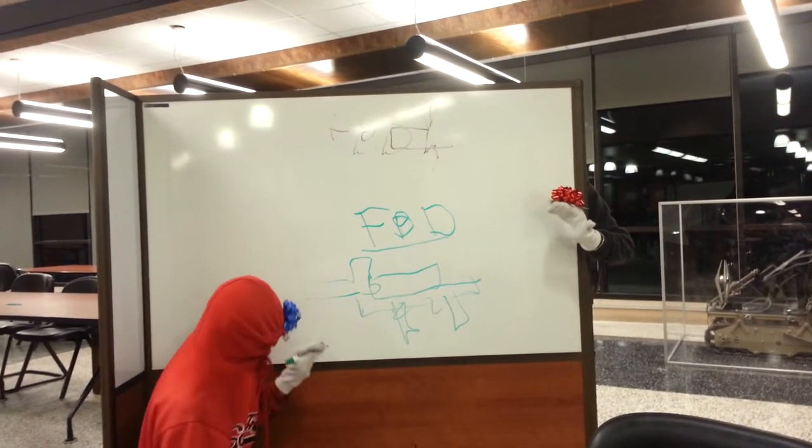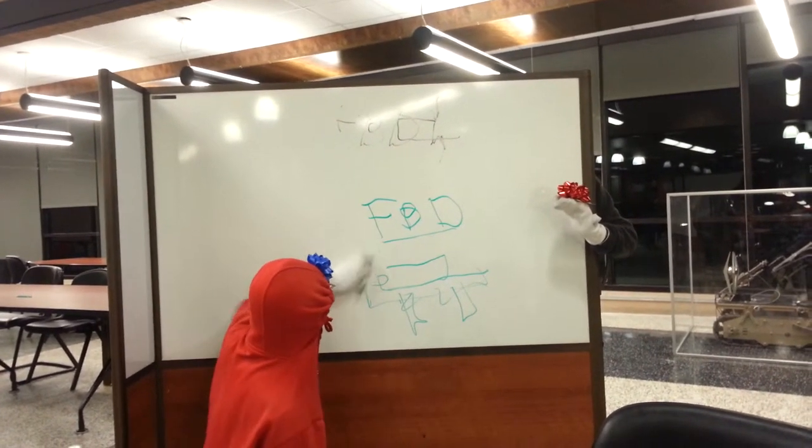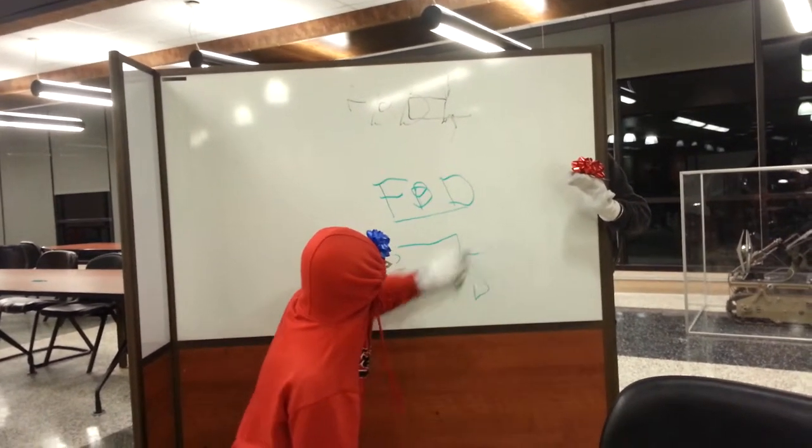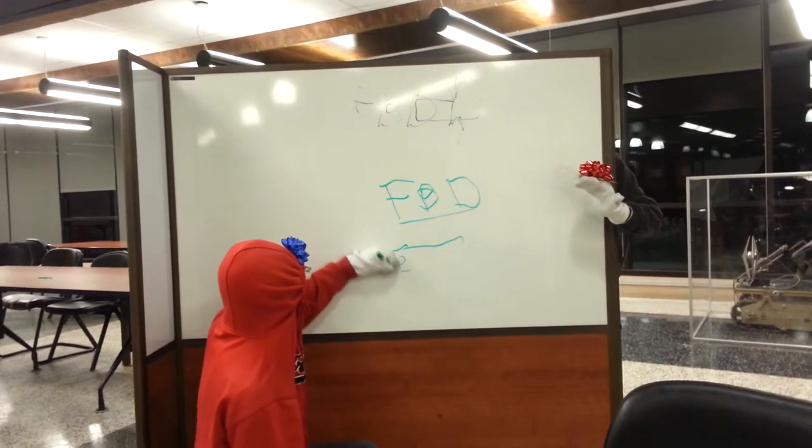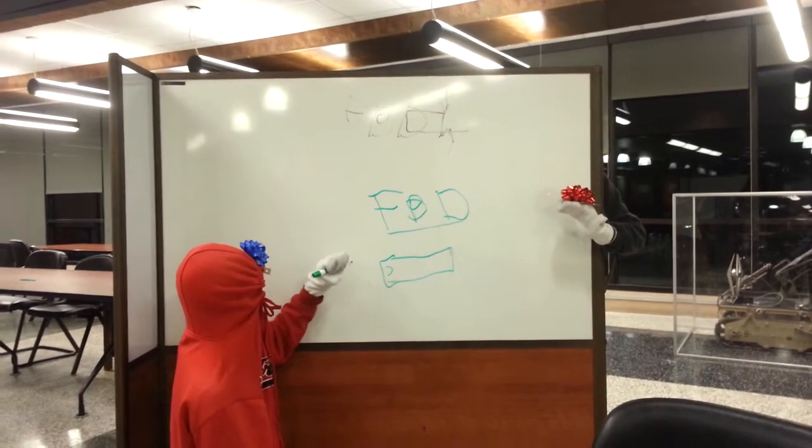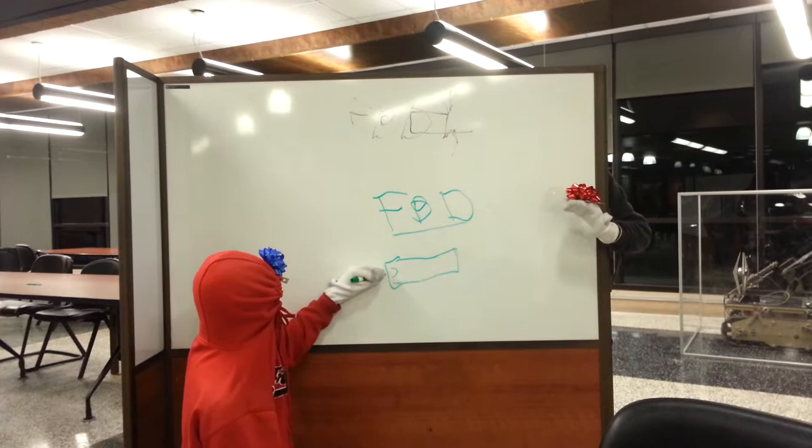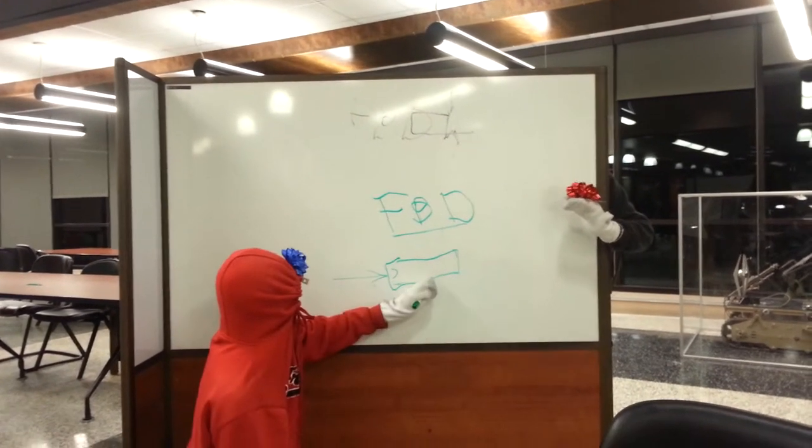So when you use Free Body Diagram, you take away the constraints, like the table and the hand. You just take them away? Yes, but you don't just take them away. You take them away and replace them with forces. Forces! Wow!